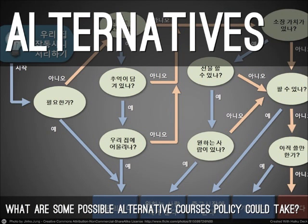Next, you want to consider Alternatives. What are some of the possible alternative courses that your policy could take? What are some directions it could go, and what are some variations on the policy that you might want to consider?